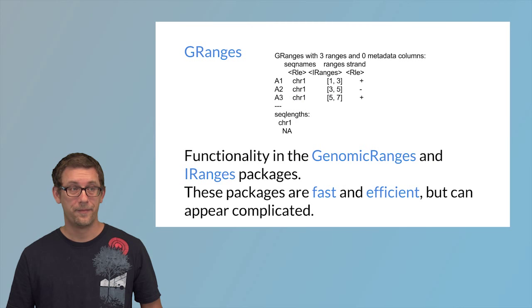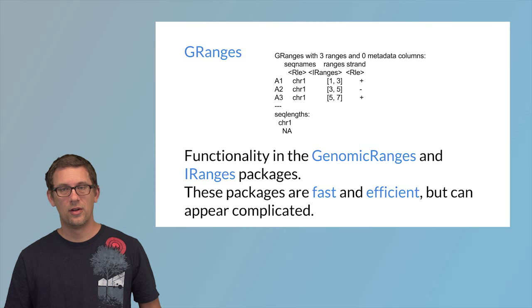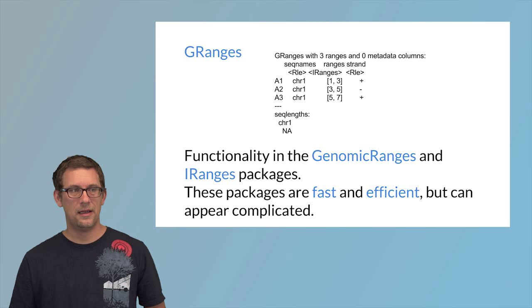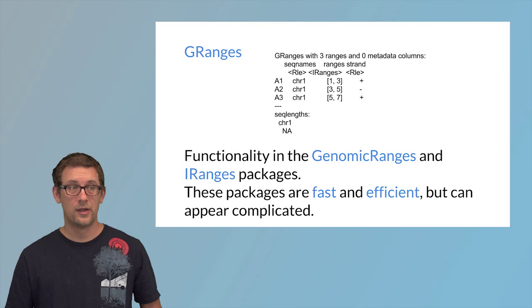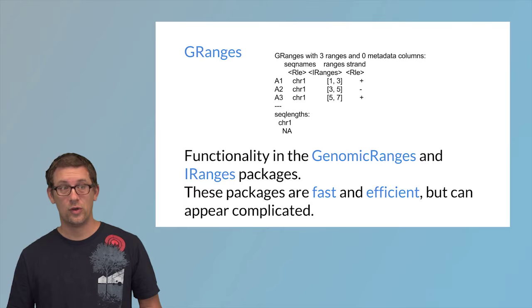So here's a little visual depiction of some R output of a GRanges. A GRanges, as you can see here, consists of three—this particular GRanges consists of three genomic intervals. The three intervals are all on chromosome 1. They have a strand associated with them.